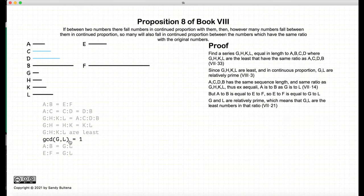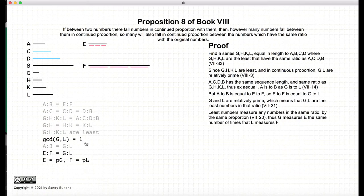Now, we know that g and l are relatively prime, which means that they are the least numbers in that ratio. So g and l are the least numbers in that ratio, and we have that e and f is equal to g to l.